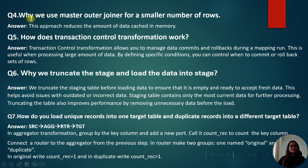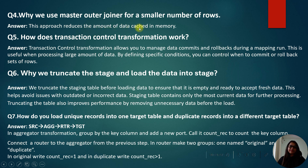Why do we use a master outer join for a smaller number of rows? Because this approach reduces the amount of data cached in memory.